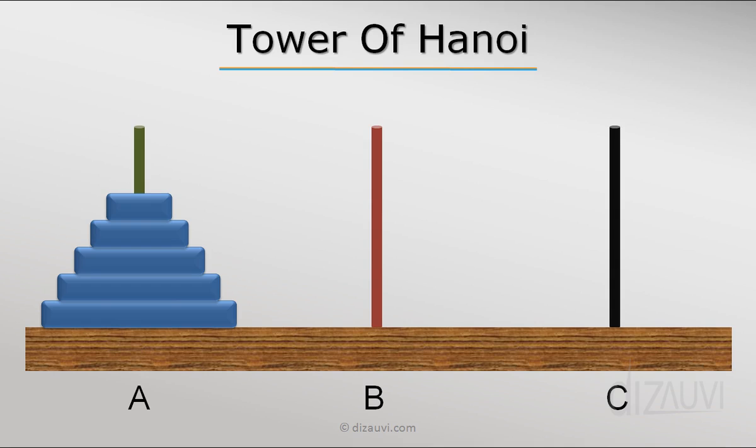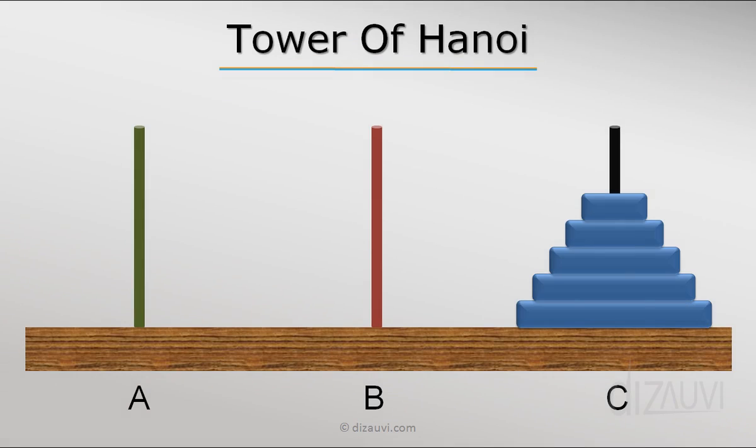And what we are supposed to do is to move all the disks from tower A to tower C using tower B as an intermediate, such that at no point of time a bigger disk comes on top of a smaller one. And one more rule is that we can only move one disk at a time.